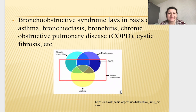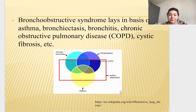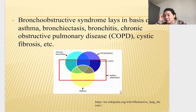Broncho-obstructive syndrome underlies asthma, bronchiectasis, bronchitis, COPD, and cystic fibrosis. On the scheme you see three overlapping circles — emphysema, chronic bronchitis, and asthma. COPD is the most severe of all these diseases and sits in the center where all three circles overlap.